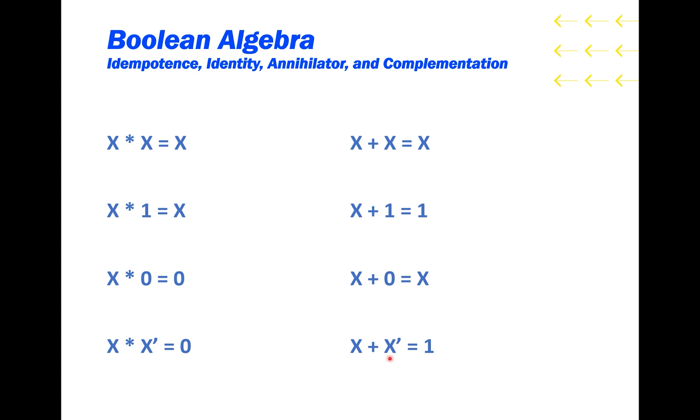If the inputs are x and x prime, then at least one of the inputs is always 1, so the OR gate must always output 1.